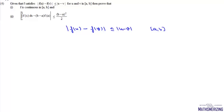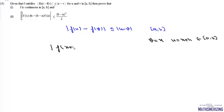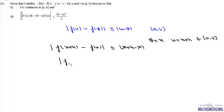We take v as x and u as x + h, where both x and x + h lie between a and b. Then we can write |f(x + h) - f(x)| < |x + h - x|.